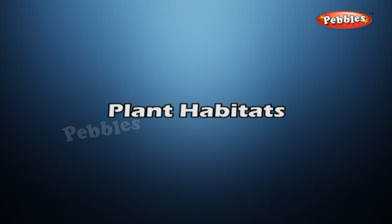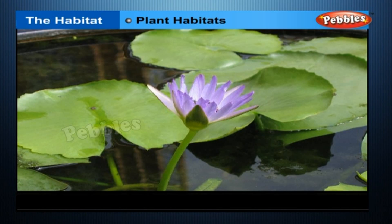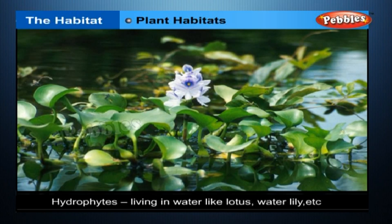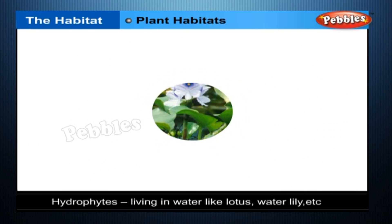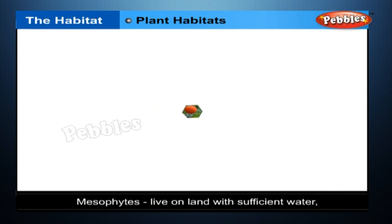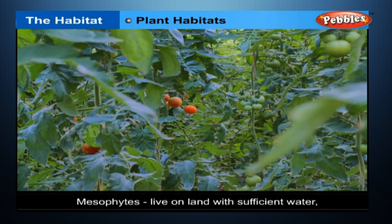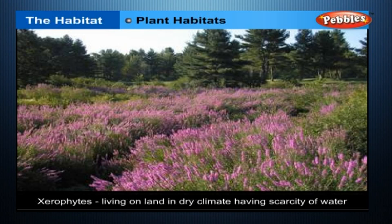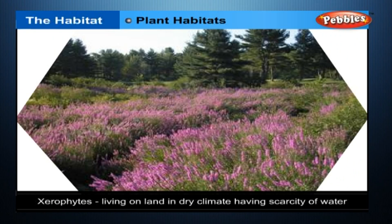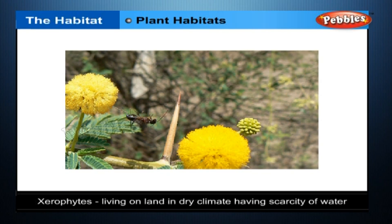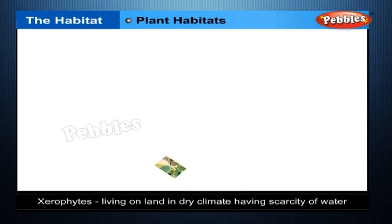Types of plants on the basis of habitat: Hydrophytes — living in water, like lotus, water lily, water hyacinth, water chestnut, singhara, and other aquatic plants. Mesophytes — living on land with sufficient water, like most herbs and trees. Xerophytes — living on land in dry climate with scarcity of water, as in a desert, like cacti, babul, and bear.